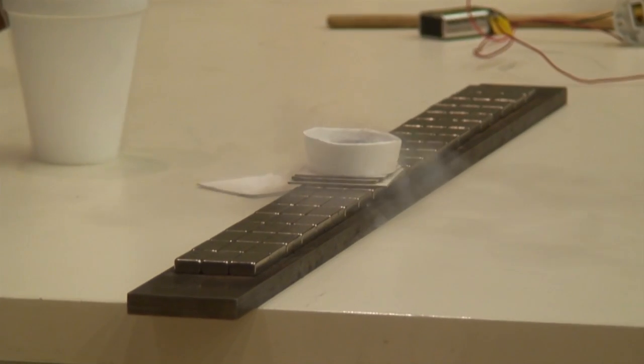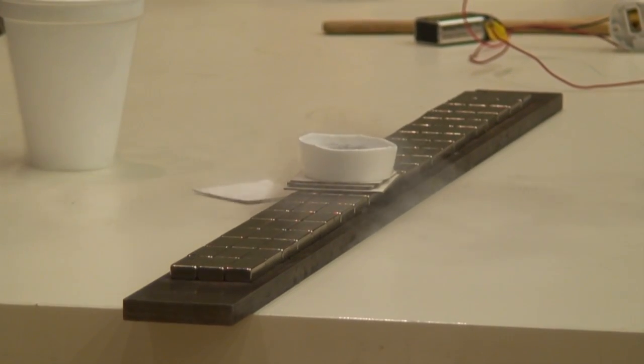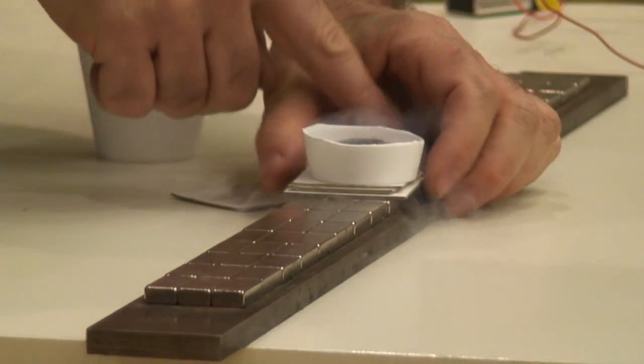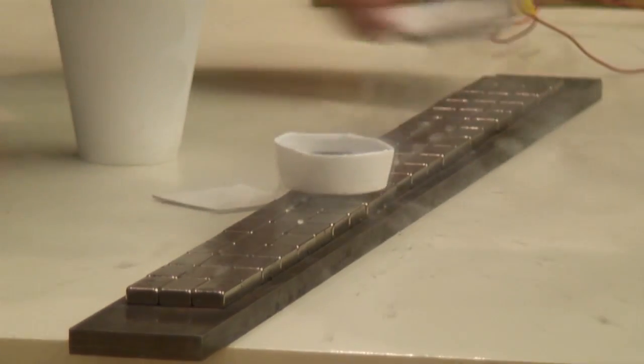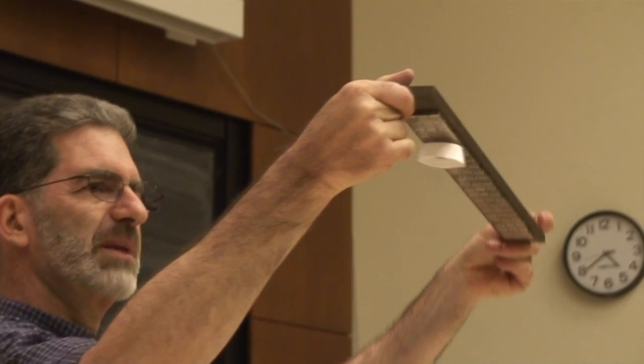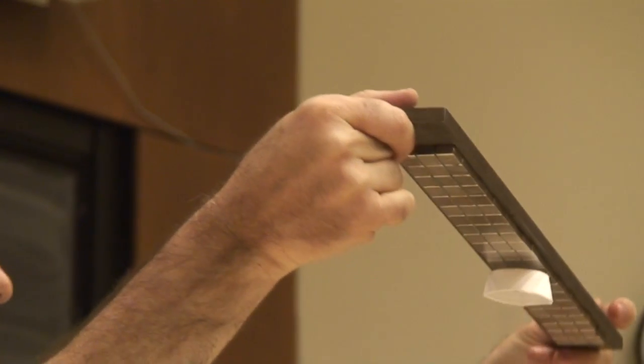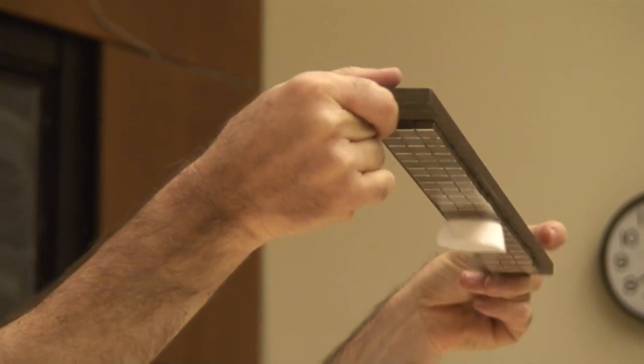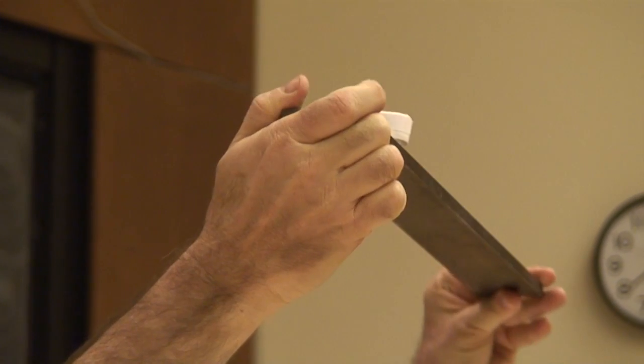When magnetic fields try to change going through the conductor... Let's see what happens when I knock it off. Instead of falling, it just floats there. Same field. No nitrogen, so it's warming up. It's not going to be a superconductor for very long, so I'm going to turn it back.